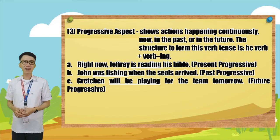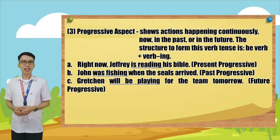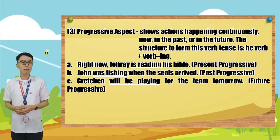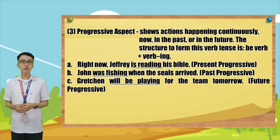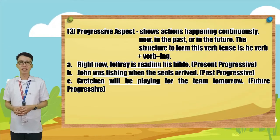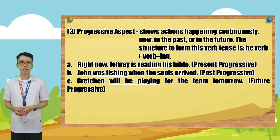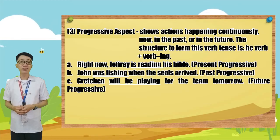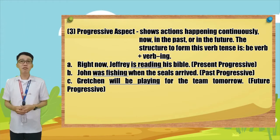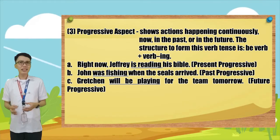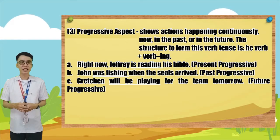Number three: progressive aspect. Progressive aspect shows actions happening continuously now, in the past, or in the future. The structure to form this verb tense is: be verb plus verb-ing. Here are the examples. Right now, 'Jeffrey is reading his Bible.' What is the tense of the underlined verb? Very good, kids! Present progressive. Letter B: 'John was fishing when the seals arrived.' What is the tense of the underlined verb? Great! Past progressive.